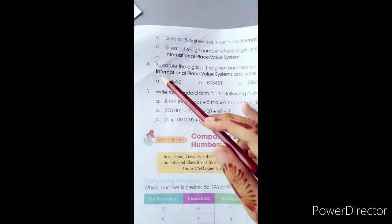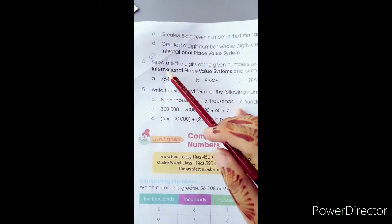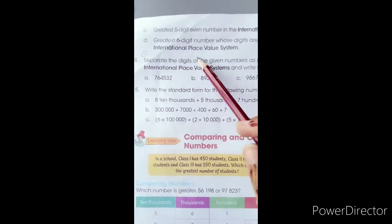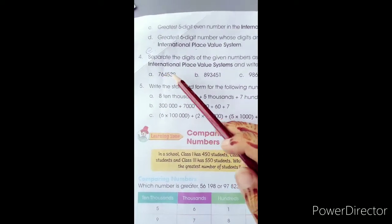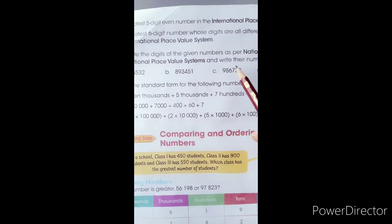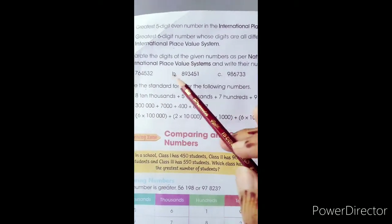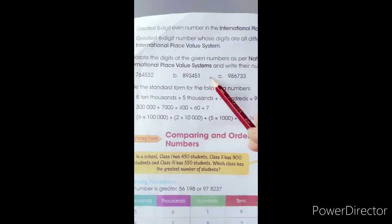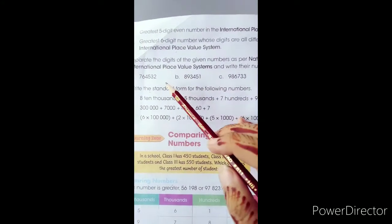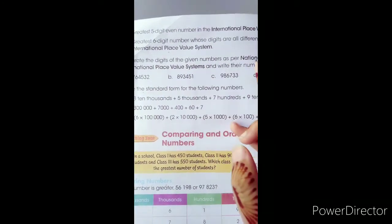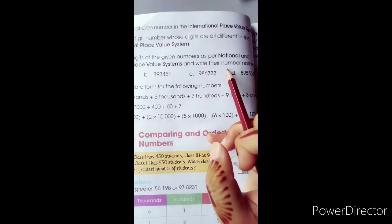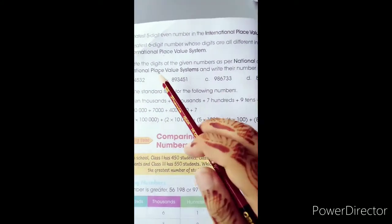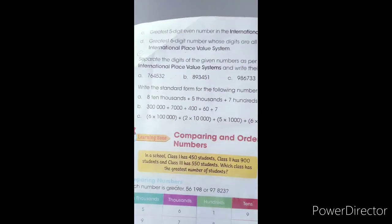We are in question number 4 and question number 5. Question number 4: Separate the digits of the given numbers as per national and international place value system and write their number names. We have four different numbers given and we have to represent the numbers as per national and international.